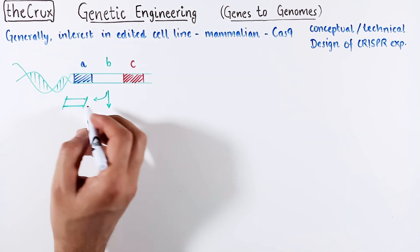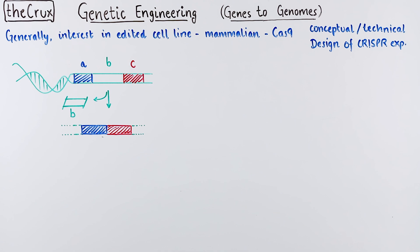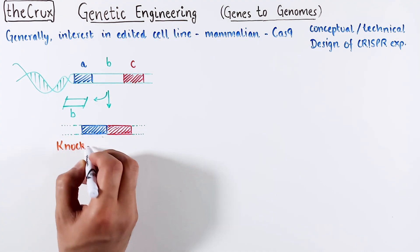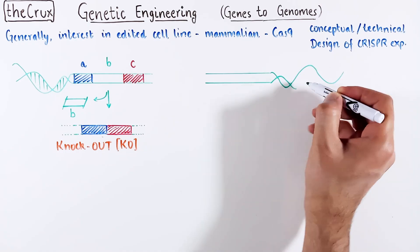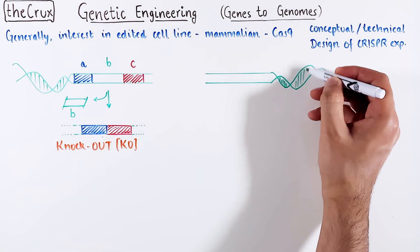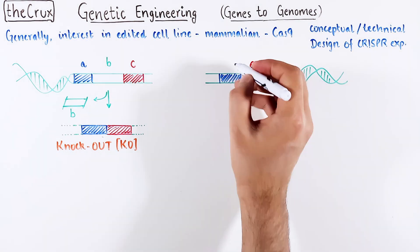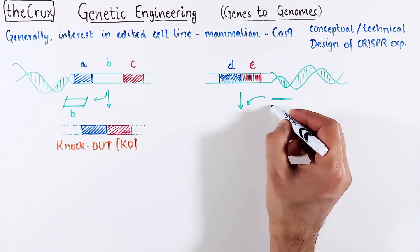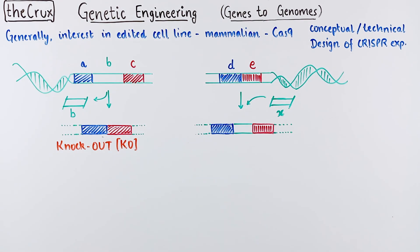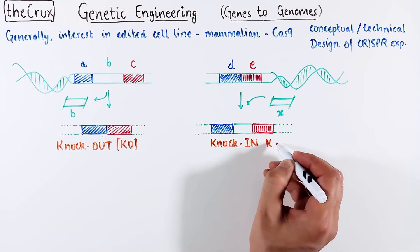One where you are trying to remove a specific portion out of the genome. This experiment is called a knockout. A simpler form of KO is just a single cut to make indels, but I will use deletion as an example. The second experiment is to do the opposite, where you want to permanently insert a desired DNA sequence into the genome. This is a knock-in experiment.